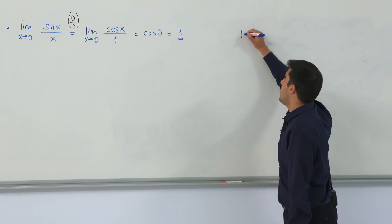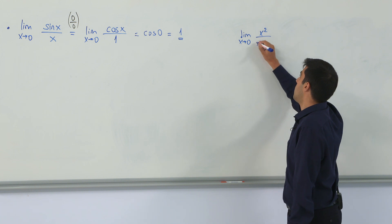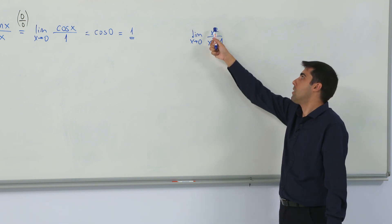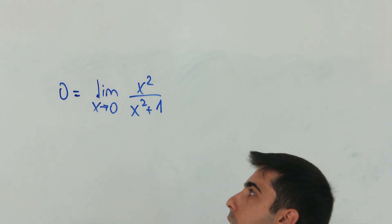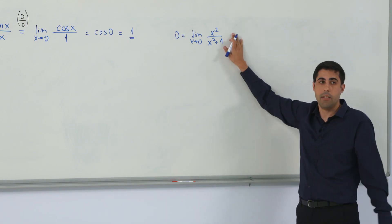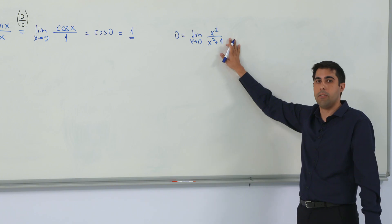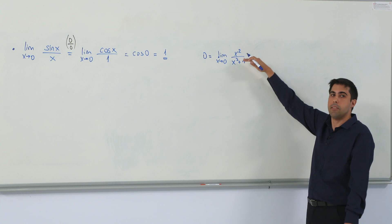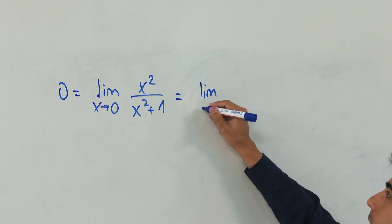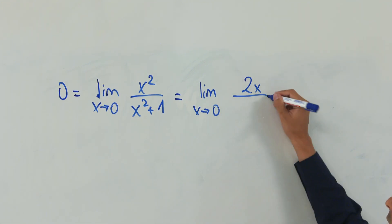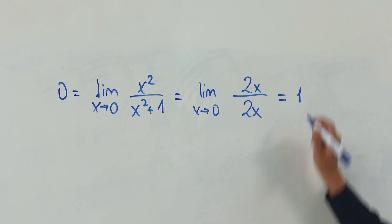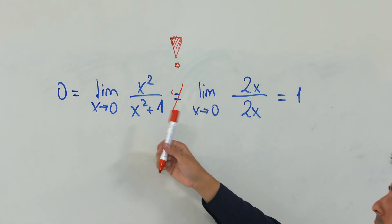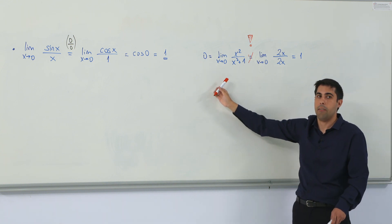Let's see another example: the limit as x goes to 0 of x squared over x squared plus 1. This is not an indeterminate form because this is 0 over 1, which is actually 0. That means when you don't have an indeterminate form, you shouldn't use L'Hôpital's rule — if you use it, you will have a wrong result. If you mistakenly take the derivative of the numerator and denominator, you get the limit as x goes to 0 of 2x divided by 2x, which is 1. As you can see, this is a wrong result. We shouldn't use L'Hôpital's rule if we don't have an indeterminate form.